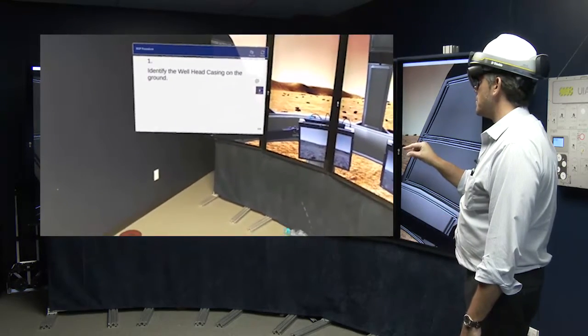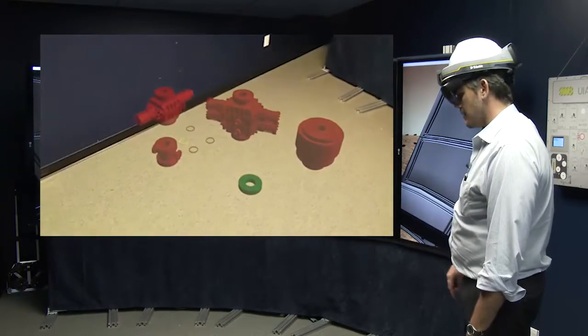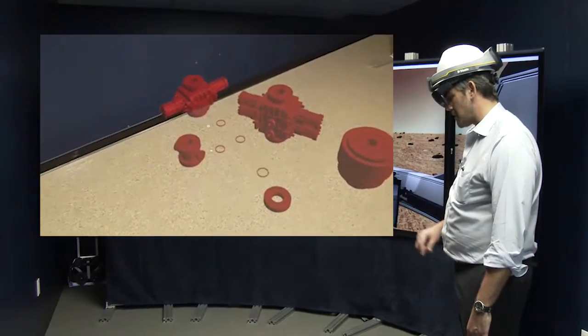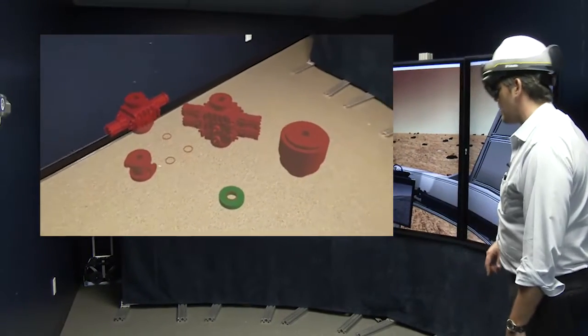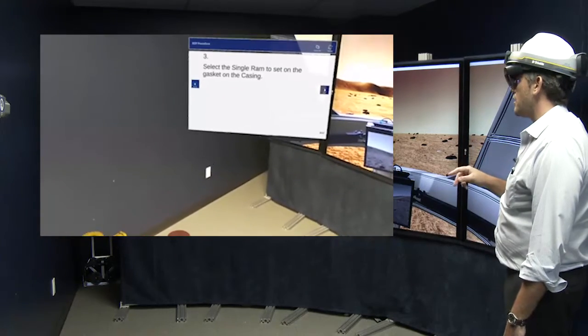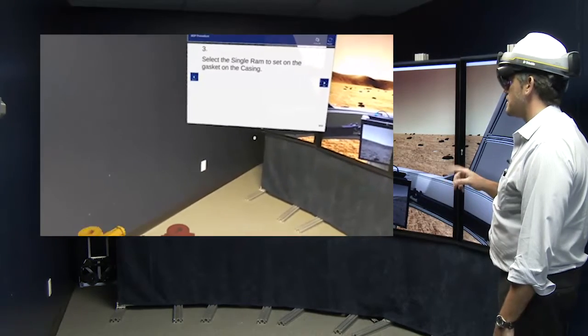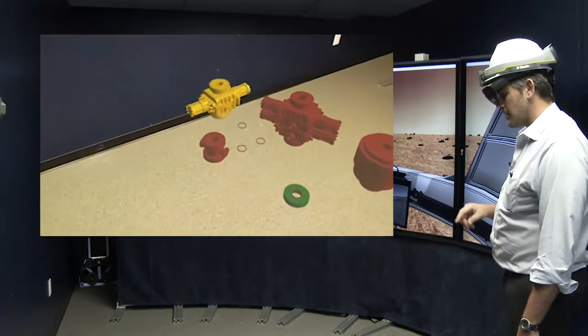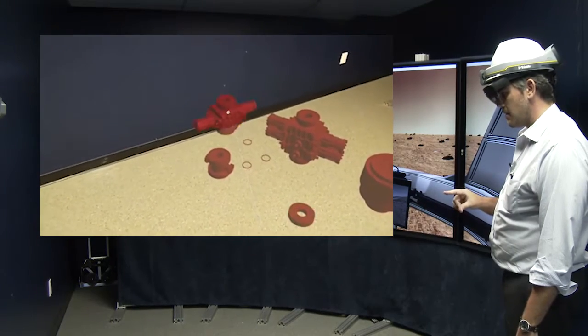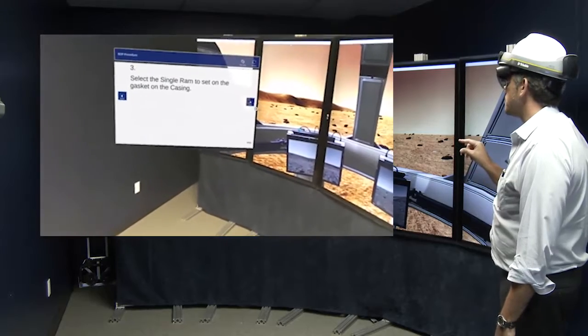Now let's go to step number two. Select a gasket to attach to casing. So we have a gasket here identified. We're just going to grab that. That's going to go over there straight on top of that. And now we'll go to step number three. Notice how everything closes out. We want to go ahead and select the single ram to set on the gasket on the casing. So again, there's your single ram. It's highlighted. I grab it, click it, it goes and sets up.